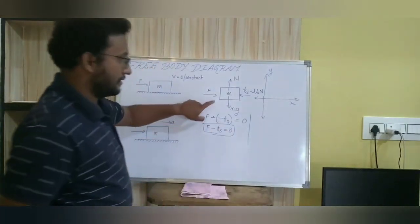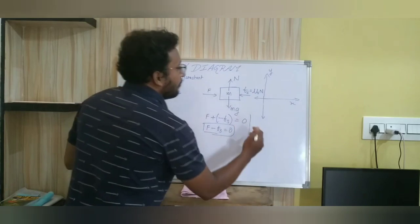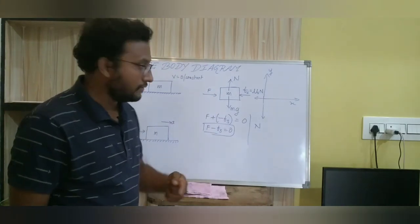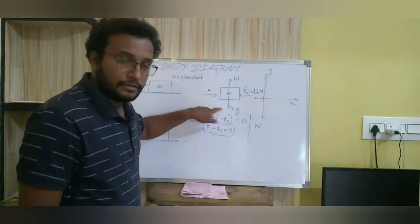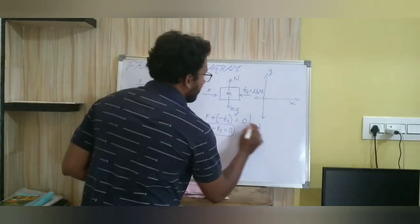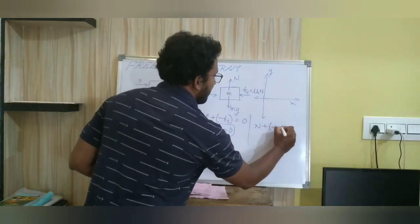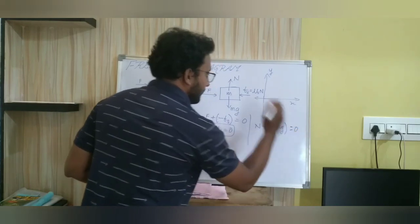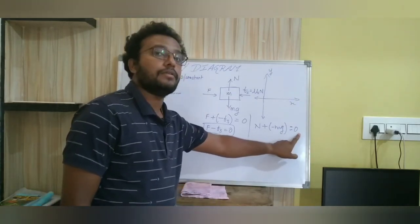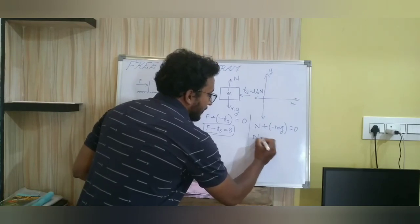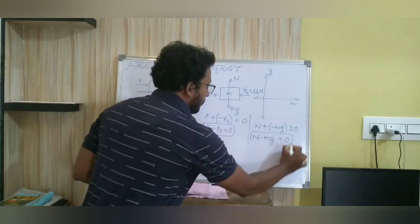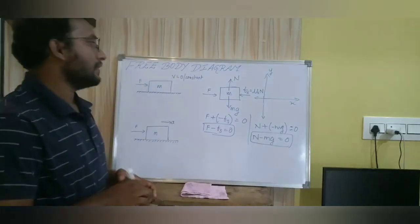Similarly, along the Y axis, forces along the positive Y axis are taken as positive and downward forces along the negative Y axis are taken as negative. The net force along the Y axis is N minus mg, which must equal zero, because the object is not accelerating along the Y axis. So N minus mg equals zero. These two are the dynamic equations that can be written easily using this free body diagram, which helps us visualize the forces and their directions.